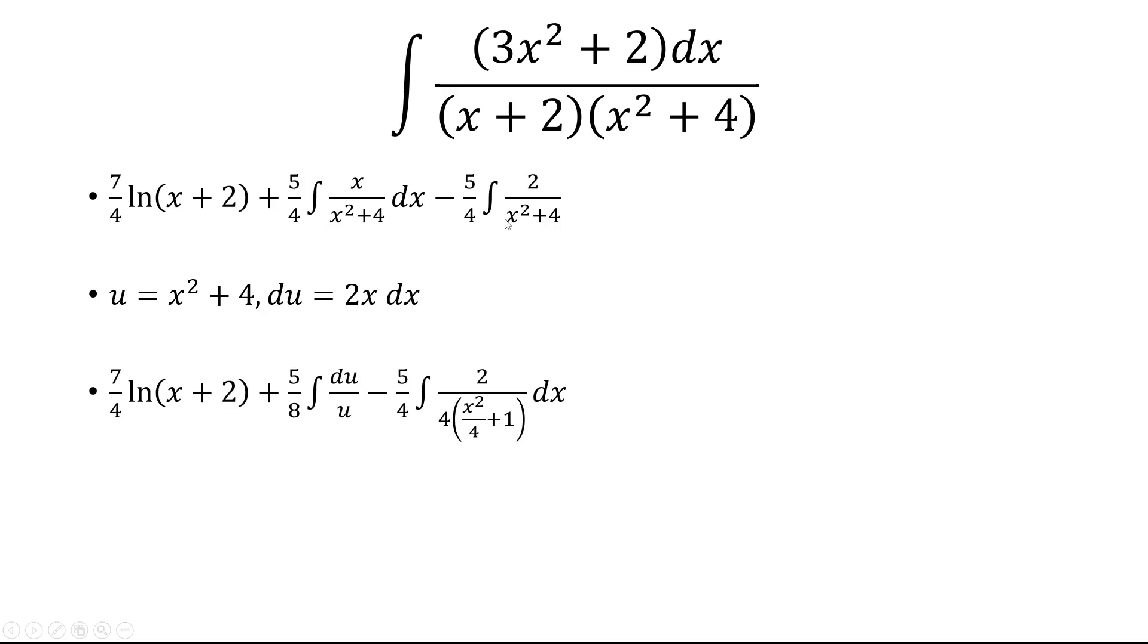And then for the other integral, what I did instead is factor out a 4 in the denominator. And so I'm left with x squared over 4 plus 1. Now the antiderivative, or the integral du over u is just ln of u.